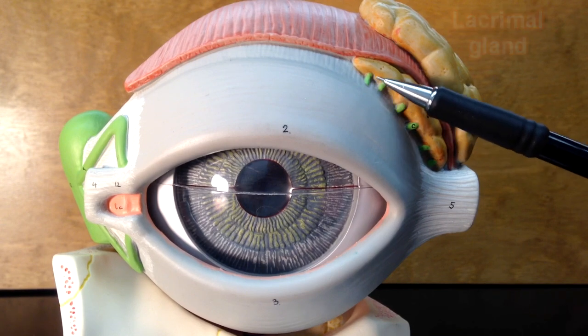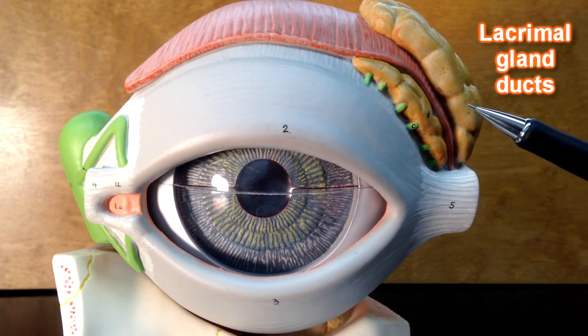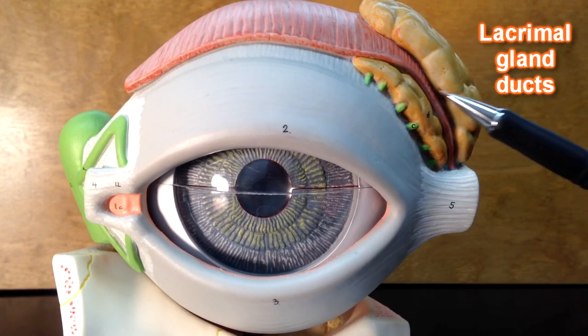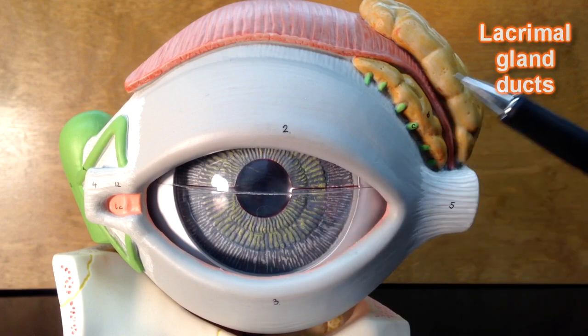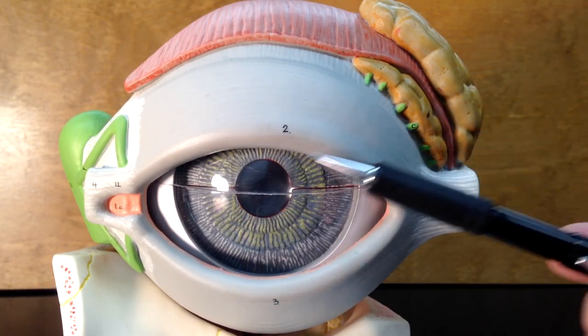These green things right here are lacrimal gland ducts. What's going to happen is the tears produced by the lacrimal gland will pass through these lacrimal gland ducts and flow across the eye from lateral to medial.